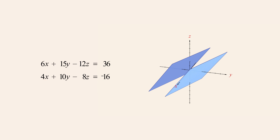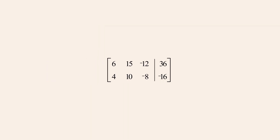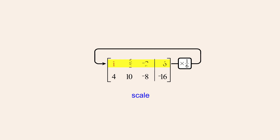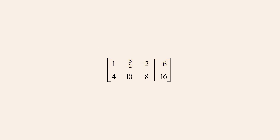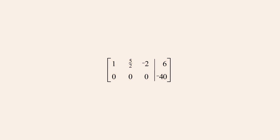So let's see what happens when we represent the system in matrix form and use Gauss-Jordan elimination to convert the system to reduced row echelon form. We start by changing the leading entry of the first row to a one using a scale operation to multiply row one by one-sixth. We then change the entry below that one to a zero using a pivot operation adding negative four times row one to row two. This changes all the coefficient entries in row two to zero but not the constant entry. At this point, we can stop since we know that the system has no solutions.